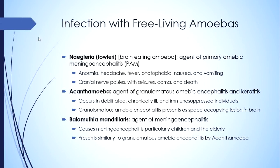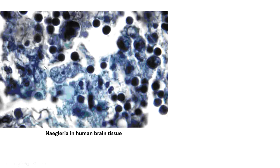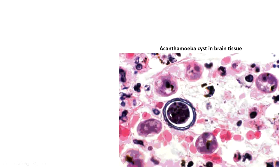A third free-living amoeba is Balamuthia mandrillaris, an agent of meningoencephalitis causing a disease very similar to acanthamoeba. This pathogen can cause disease in immunocompetent as well as immunocompromised patients, but is more common at the extremes of age — young children, elderly, pregnant women, or patients on glucocorticoid therapy — though it can also cause disease in otherwise healthy people. It presents similarly as granulomatous amoebic encephalitis, and treatment is the same. In this picture you can see active Acanthamoeba and Naegleria inside brain tissue, and a cyst of Acanthamoeba inside brain tissue — both are brain biopsy specimens.